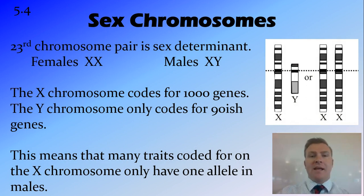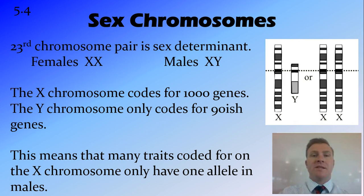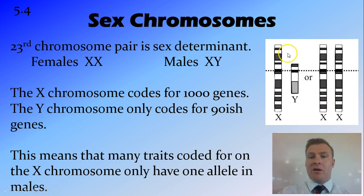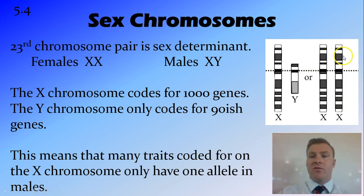So let's have a look at why this happens. The 23rd pair of chromosomes is the sex determinant chromosome — these are the ones that determine whether somebody is male or female. In a male you have XY, and in a female you have XX. You can see from this depiction that the X chromosome is a large chromosome that codes for over 1,000 different traits.